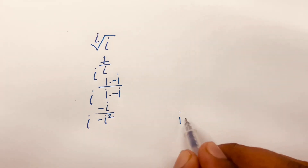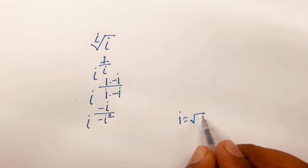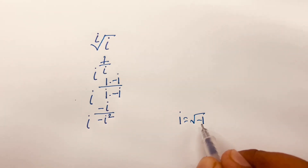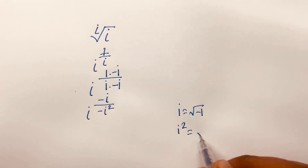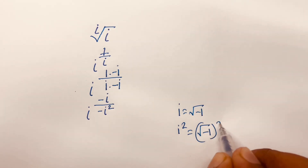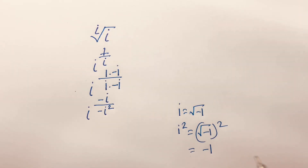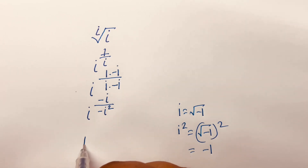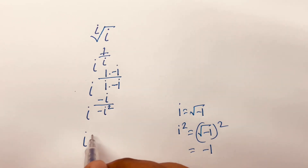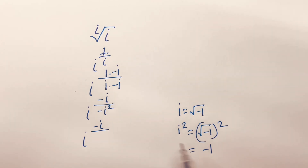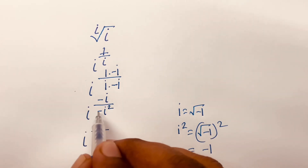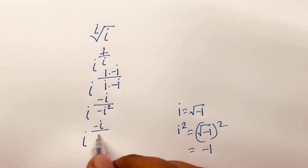We know that i is equal to square root of minus 1, and i squared — it will be square root of minus 1, bracket to the power 2, so it will be minus 1. So I can say here is i to the power minus i over — look — minus 1 times minus, it will be plus 1.